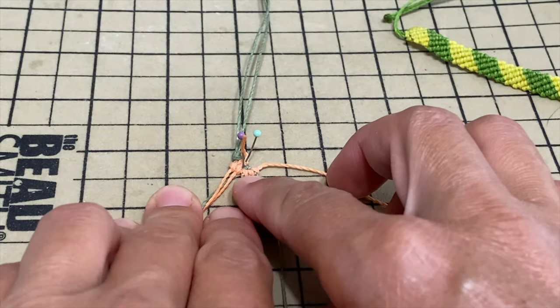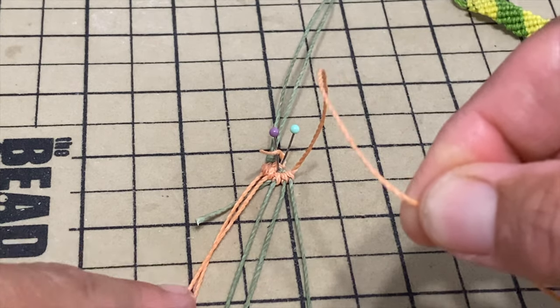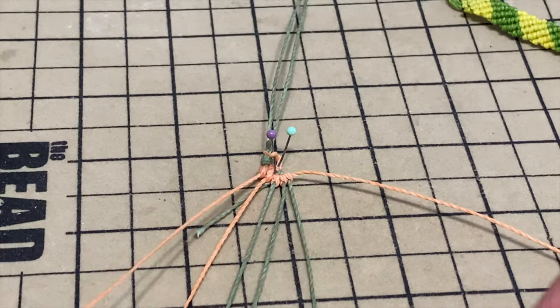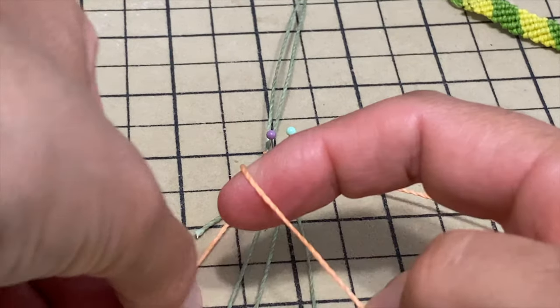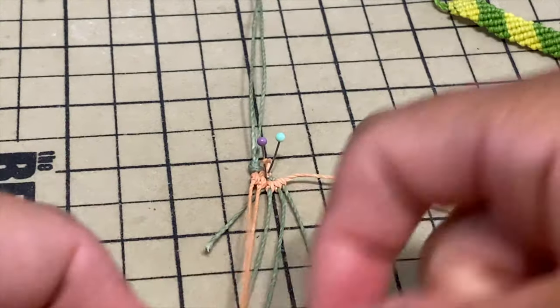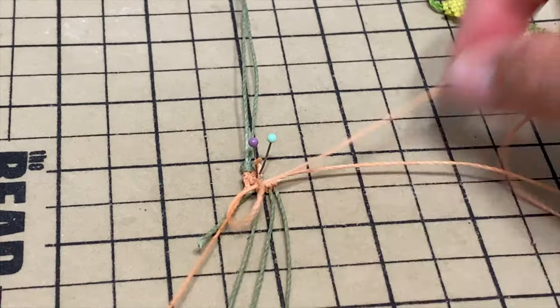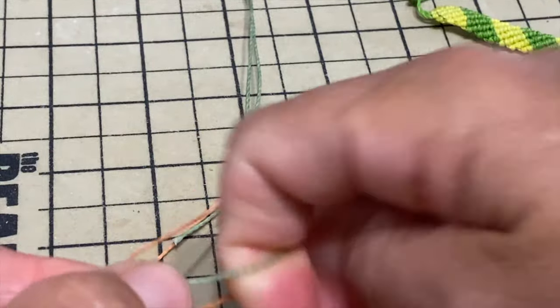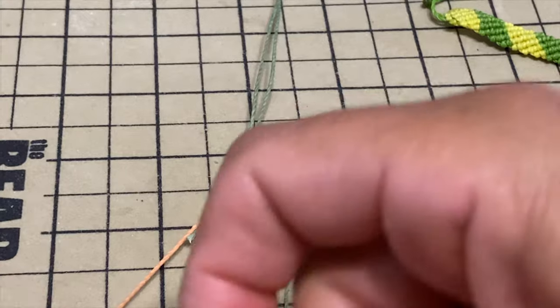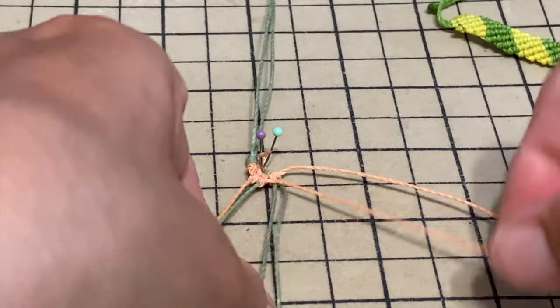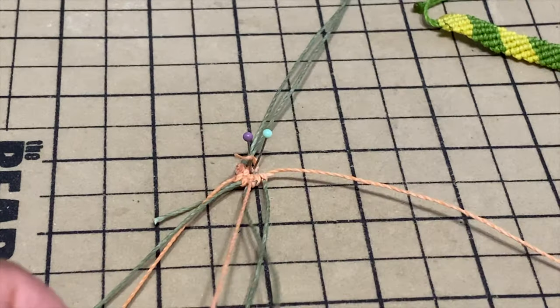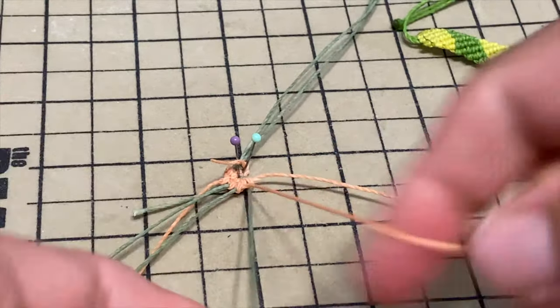Okay, so we have our first row. This string that started on the left is now all the way to the right. So now we're going to take the string that's all the way to the left and repeat the same thing. In this type of anklet, we are just repeating the same thing until you have the desired length.